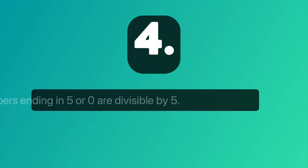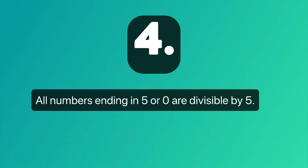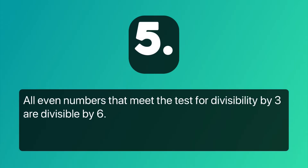Number 4: All numbers ending in 5 or 0 are divisible by 5. Number 5: All even numbers that meet the test for divisibility by 3 are divisible by 6.